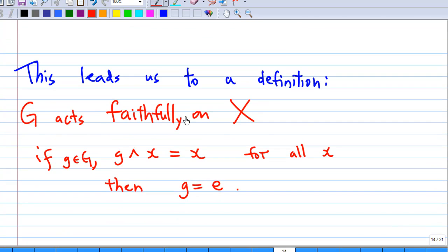This leads us to a definition. G acts faithfully on the set X if any element g such that g^x equals x for all x belonging to X here, then g must be E. So, if you have this kind of group action, then this type of group action is a faithful group action.